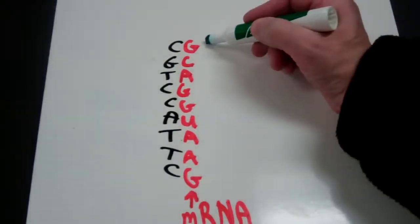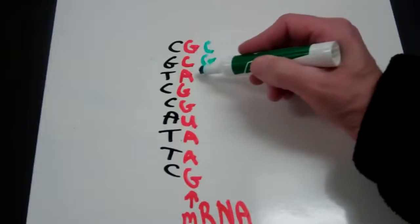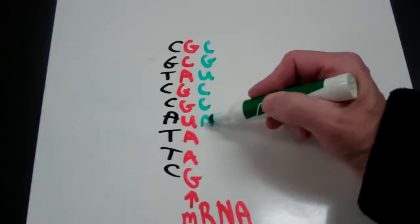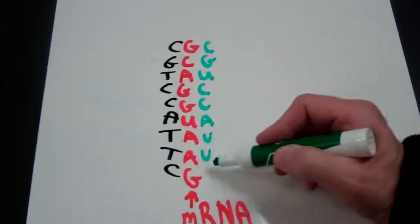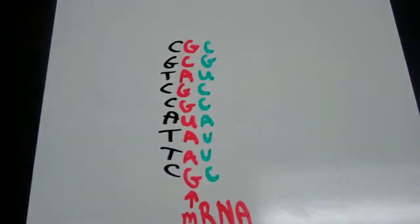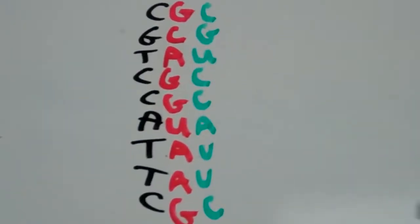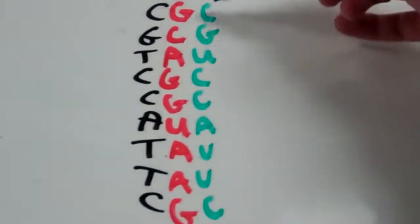So that will be C, G, U, C, C, A, U, U, C. And that's my messenger RNA—that's my transfer RNA, excuse me. So this green, this is my transfer RNA.